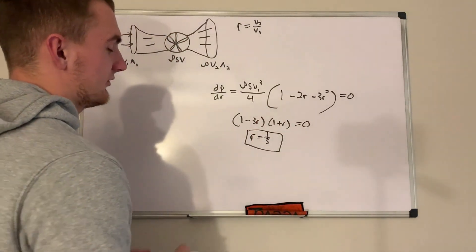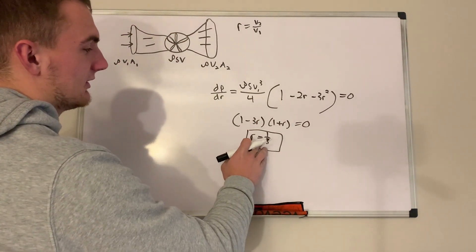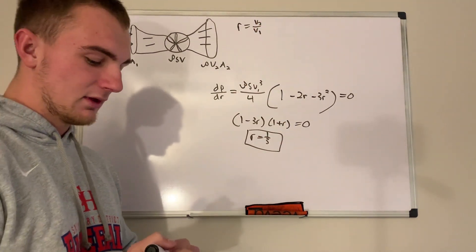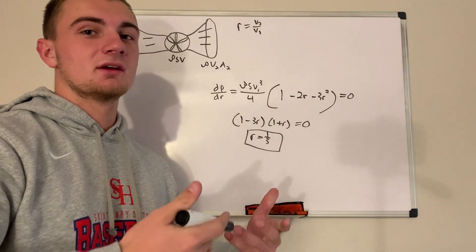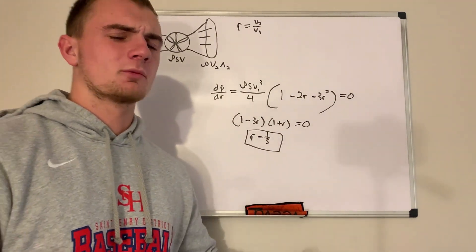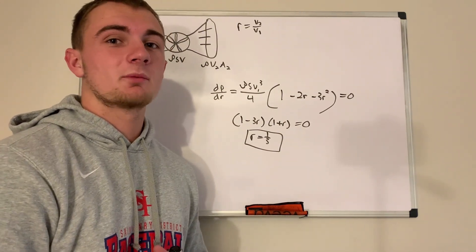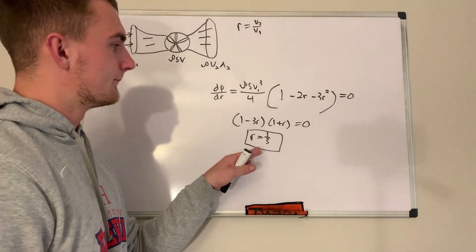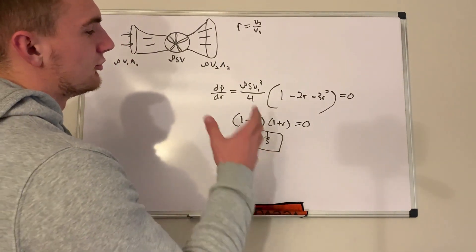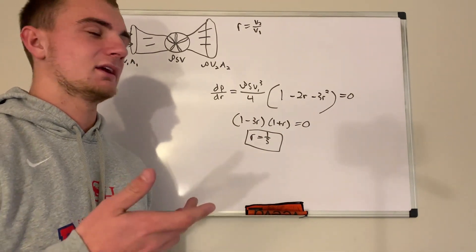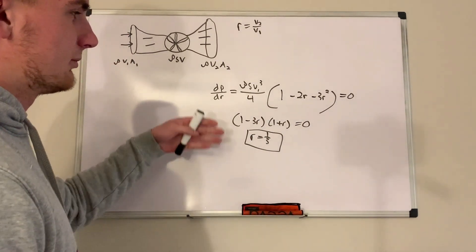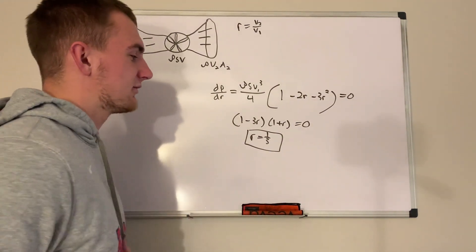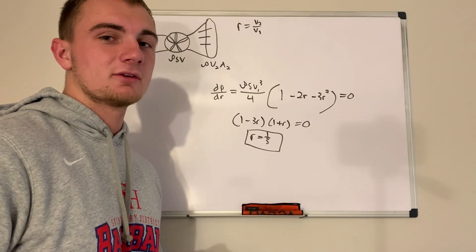We have successfully shown that the ratio of outlet to inlet velocity equals one-third to achieve maximum power in the turbine. We could plug r = 1/3 back in to solve for the actual maximum power, but that's a simple substitution. We have solved what was required, and that will conclude this video. Thank you for watching.